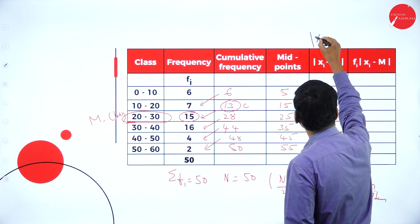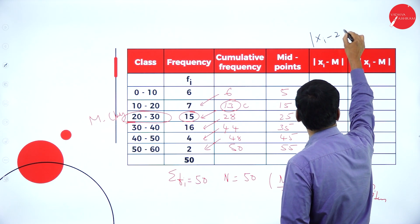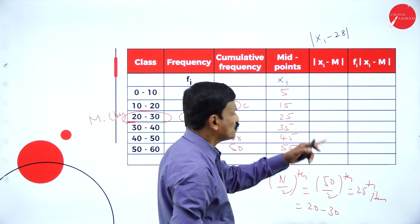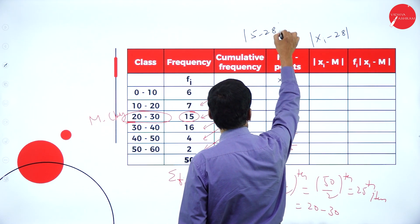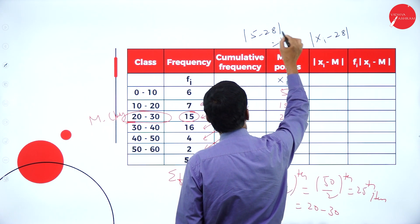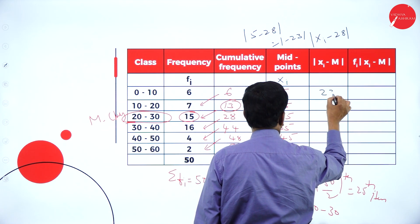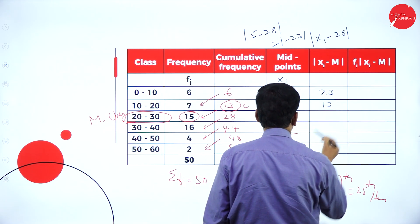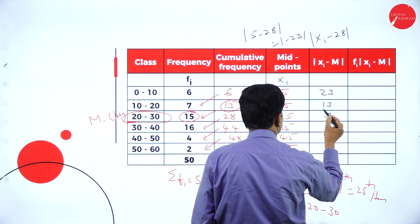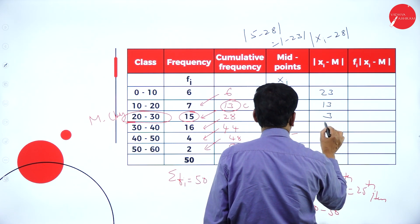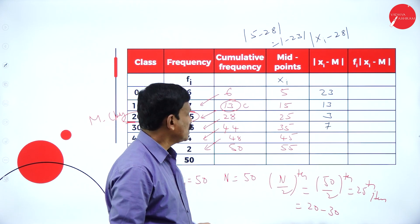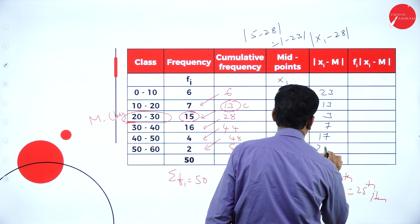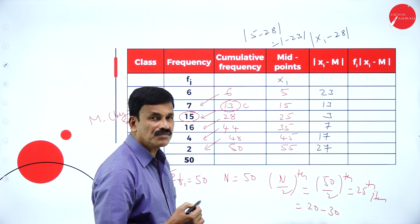Now substitute the median M equals 28. Find mod of Xi minus M for each midpoint. 5 minus 28 equals minus 23, modulus is 23. 15 minus 28 equals minus 13, modulus is 13. 25 minus 28 equals minus 3, modulus is 3. 35 minus 28 equals plus 7. 45 minus 28 is 17. 55 minus 28 is 27. This is mod of Xi minus M, the deviation from the median.